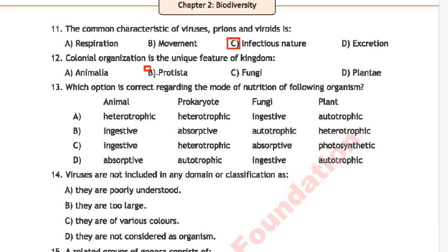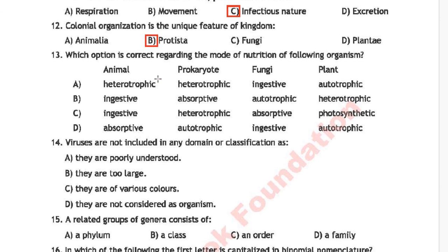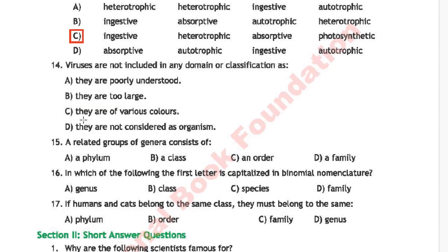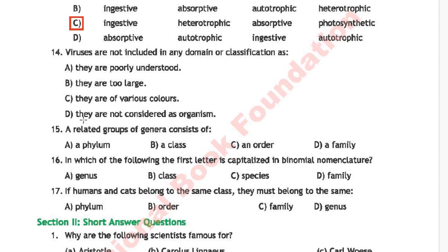Question 10: Which option is correct regarding the modes of nutrition of the following organisms? Four options A, B, C, and D are displayed on screen. The correct answer is option C.